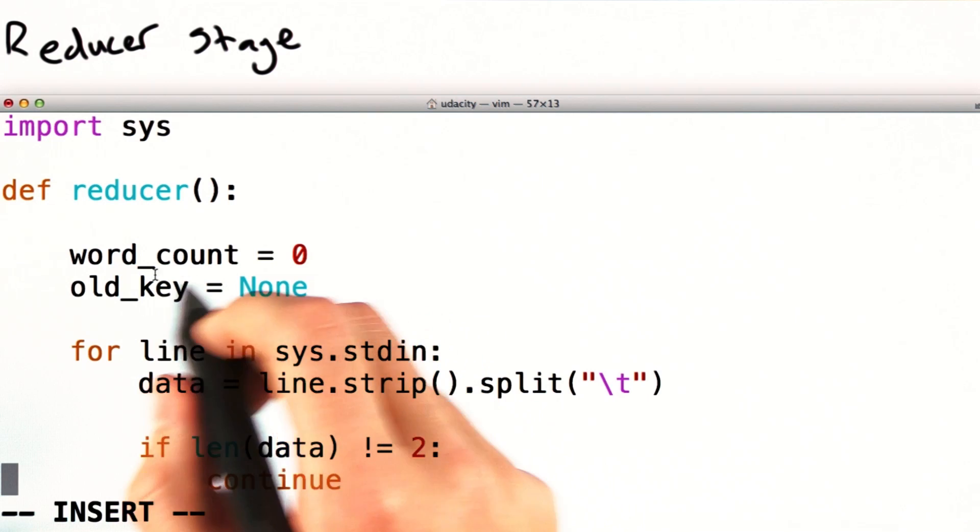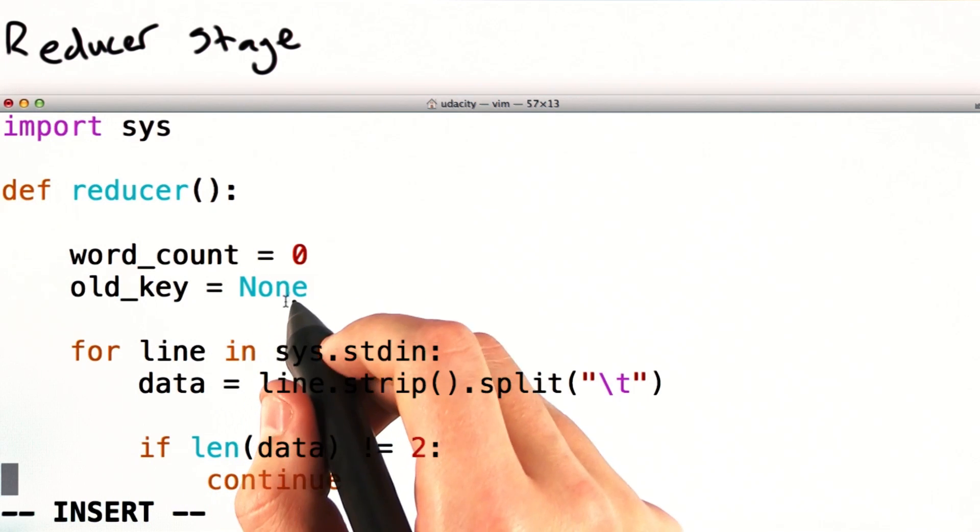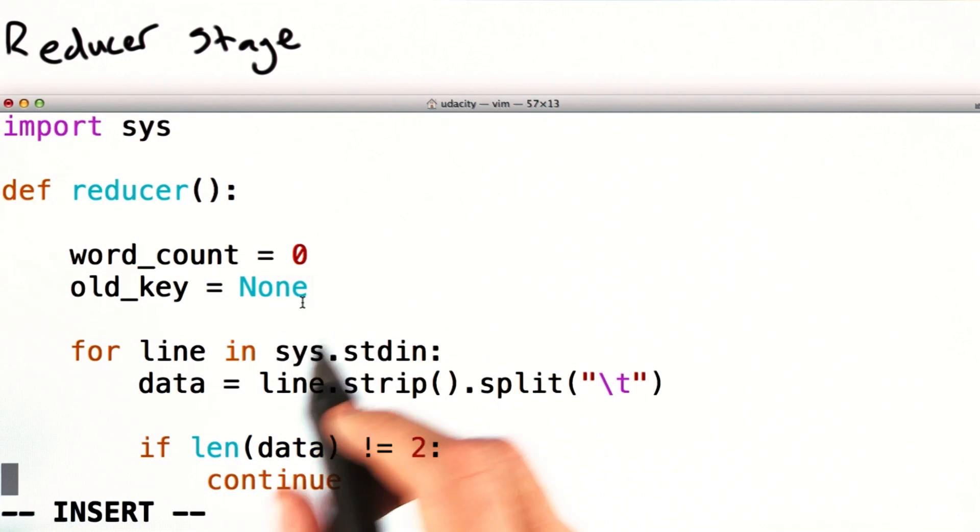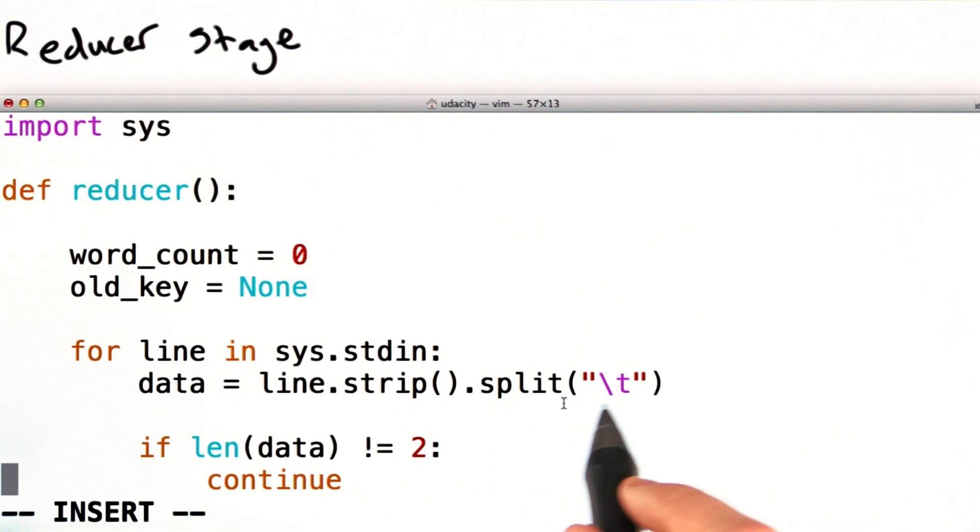First, we set initial values for word count and old key to zero and none respectively. We take in our data, which you'll recall will be a bunch of key value pairs separated by a tab. If we have a strange row with more or less than a key and a value, i.e., the length of the data array is not equal to two, we'll just continue on to the next row.